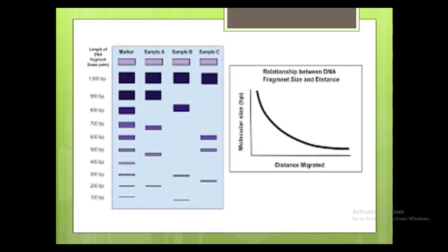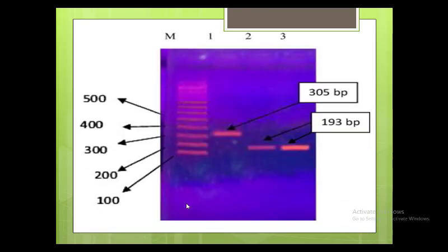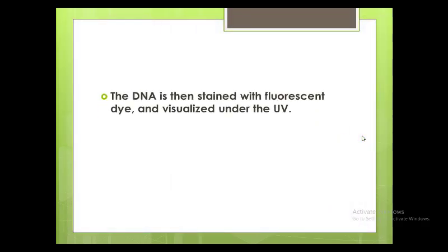This is the diagrammatic explanation of gel electrophoresis. These are samples of DNA that are separated. DNA with higher molecular weight is on the upper side of the gel, and lower molecular weight DNA is at the lower side of the gel. This picture also shows gel electrophoresis clearly — smaller molecules are on the downward side and the larger ones are on the upper side. The DNA is then stained with a fluorescent dye and visualized under UV.